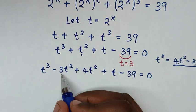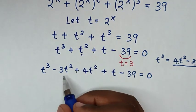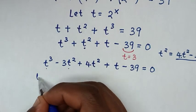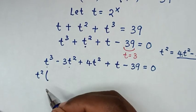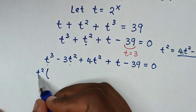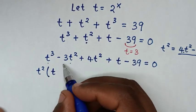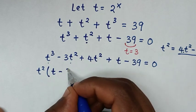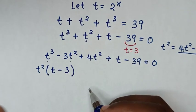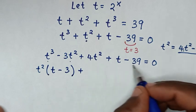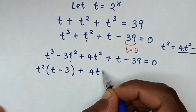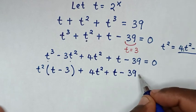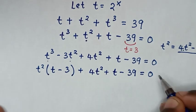From here, t^2 is common in the first two terms, so we factor out t^2: t^2(t − 3), then plus 4t^2 + t − 39 = 0.